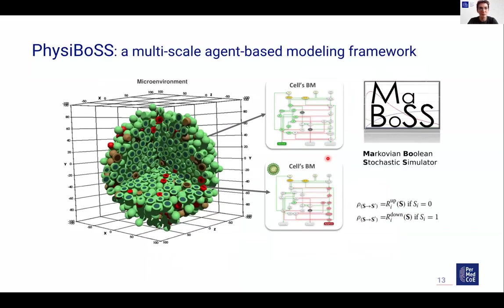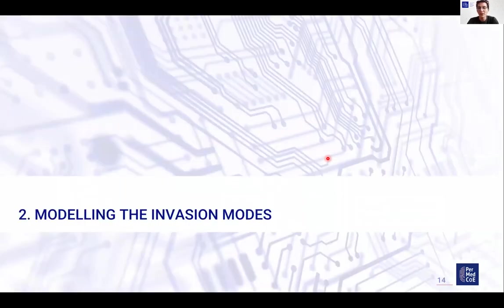Putting together PhysiCell and MaBoSS, we have PhysiBoss — a multi-scale agent-based modeling framework where each agent incorporates a Boolean network that represents the interplay between genes and proteins. At each simulation step, each agent cell collects stimuli from other agents and the microenvironment, and then, according to the states of the network, it performs some behaviors and acquires different phenotypes. This concludes the introduction, so let's get into the detail of the model.